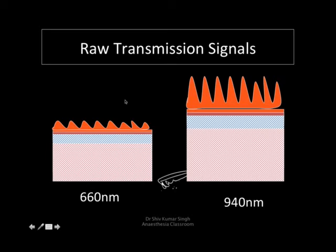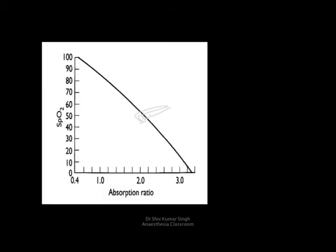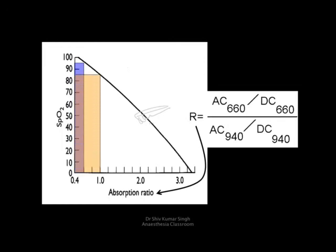The pulse oximeter equalizes the DC component, and then we look at the ratio of absorption at the two wavelengths: AC660/DC660 divided by AC940/DC940. This gives us an absorption ratio called R, which is plotted on a graph to get the saturation values. When the ratio is around 0.6, we get a value of 97%, but when the ratio equals 1, we get 85%. These values are drawn from volunteers — and because volunteers cannot be ethically desaturated below 80%, any reading below 80% is an extrapolation and cannot be trusted.